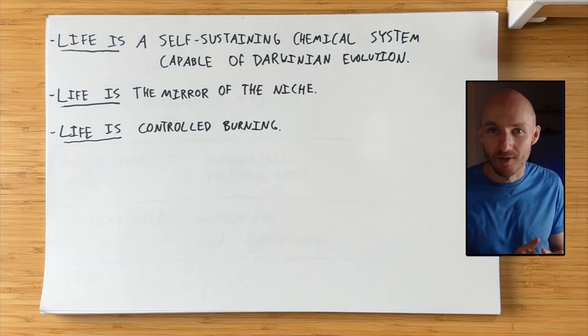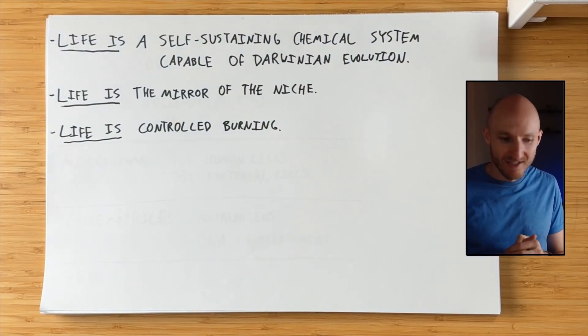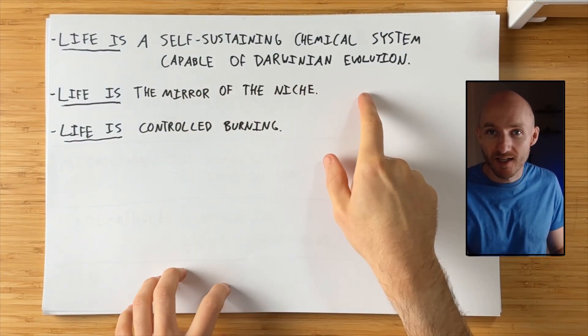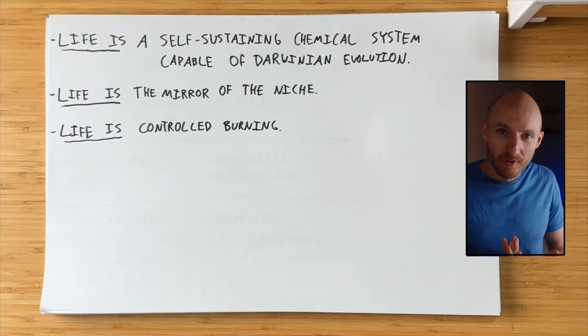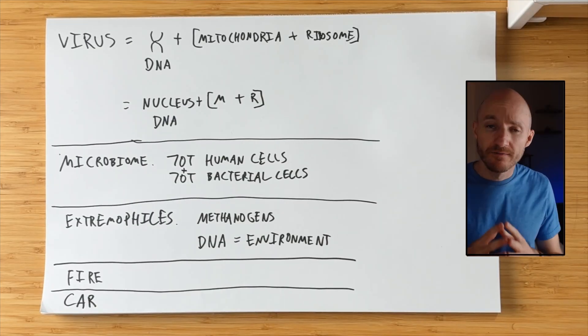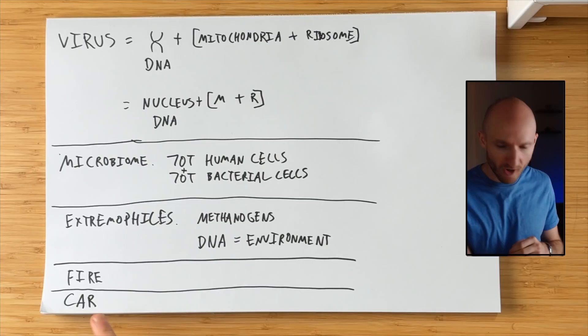But as we're burning it, we're bringing it through a very specific molecular process that stores up the electrons over time, and stores up the energy over time, and then eventually transfers out to ATP that the rest of our body can use. And so fire is just straight burning, arguably not a system capable of Darwinian evolution, but life has controlled burning and is capable of Darwinian evolution.